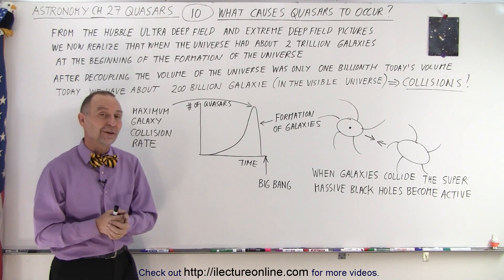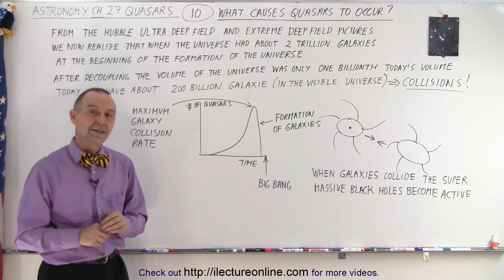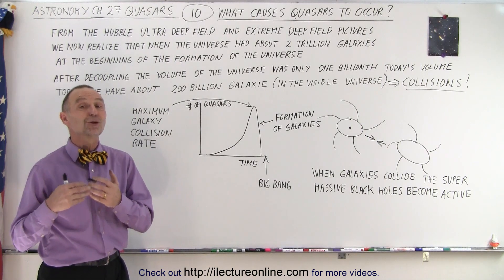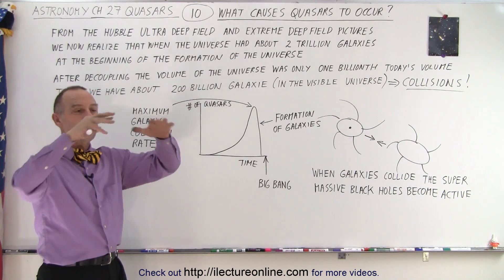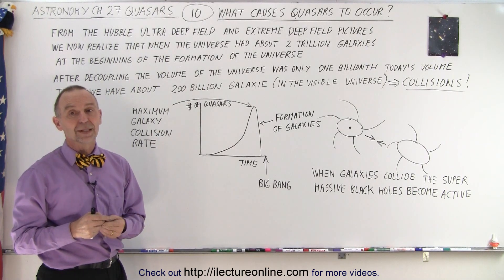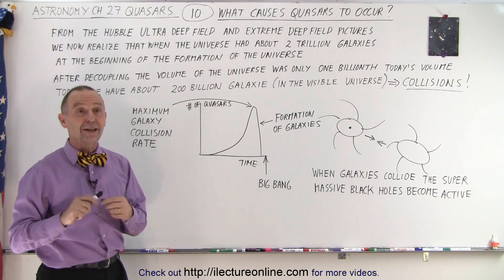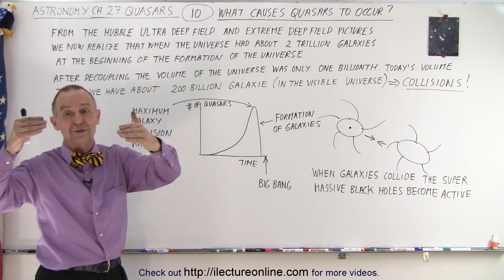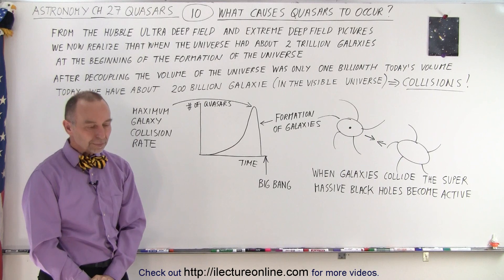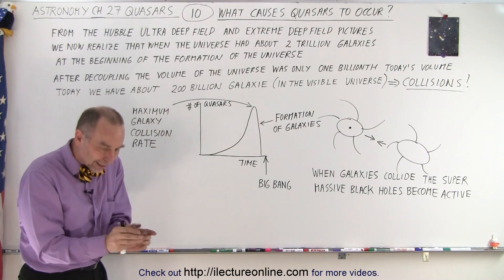That is what fuels quasars — the actual collision of galaxies where one or both contains a black hole, causing that black hole to become active. A student asks: why are parts of the visible universe not visible? Is it because light hasn't reached us? The instructor clarifies they're discussing the visible universe. Parts of the universe are not visible because they're so far away that light hasn't been able to reach us yet. The expansion is actually outpacing our ability to see it — there are parts of the universe that will always move away faster than we can ever see them.